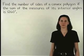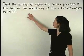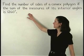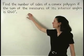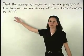In this problem, we're asked to find the number of sides of a convex polygon if the sum of the measures of its interior angles is 1260 degrees.